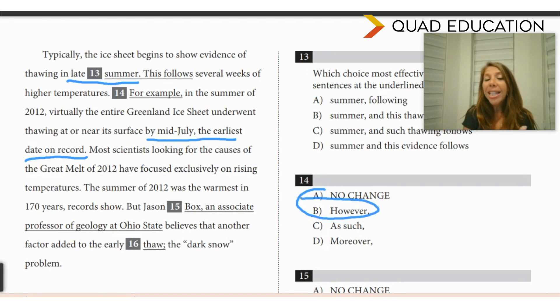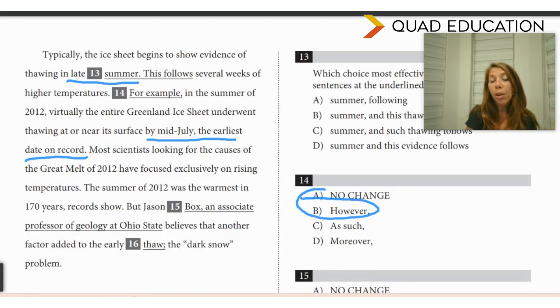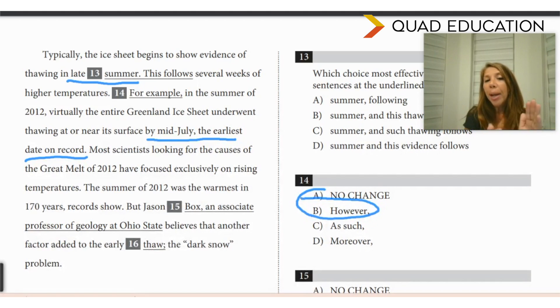Now, incidentally, if we had two answer choices that meant the same thing, such as moreover and furthermore, those two answers would cancel each other out. So that's a neat trick as well.